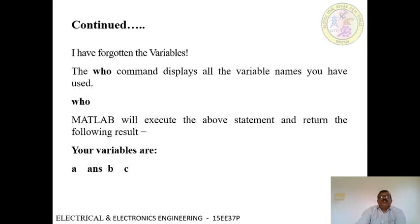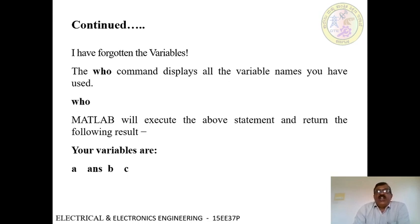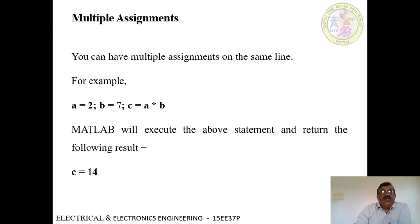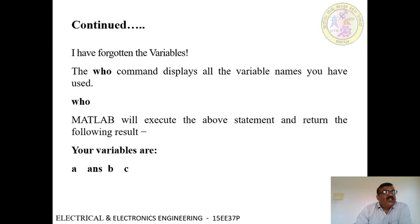Suppose the user has forgotten the variables. Whatever variables were created, the user may have forgotten them at a later stage. The who command helps to display all the variable names the user has used in the program. If you type 'who' in front of the command window prompt, MATLAB will return the result: your variables are a, ans, b, and c. In addition to the user-defined variables, MATLAB also displays the default variable ans. All variables are displayed in alphabetical order: a, ans, b, c.